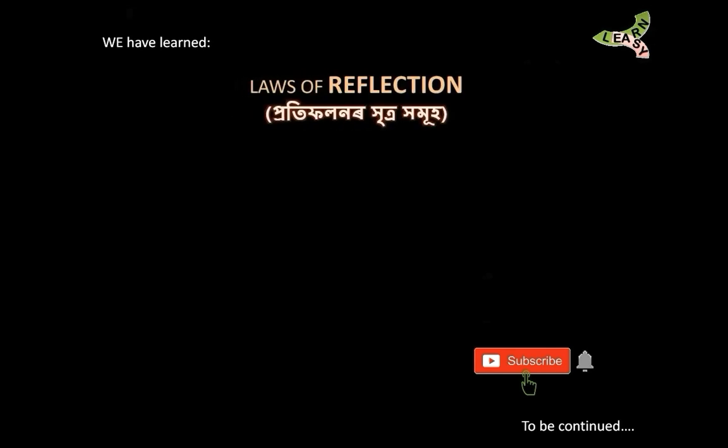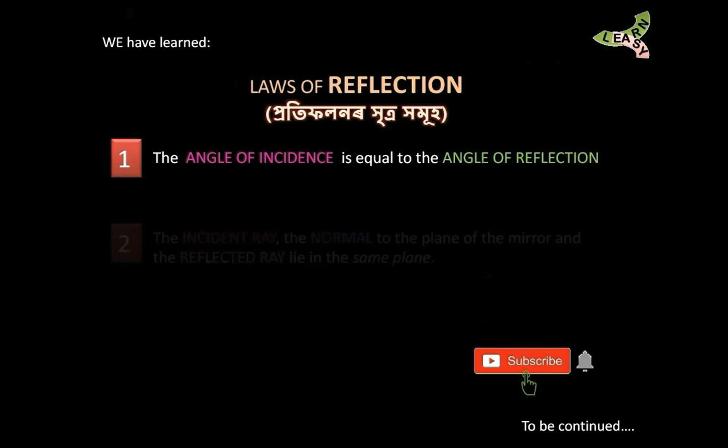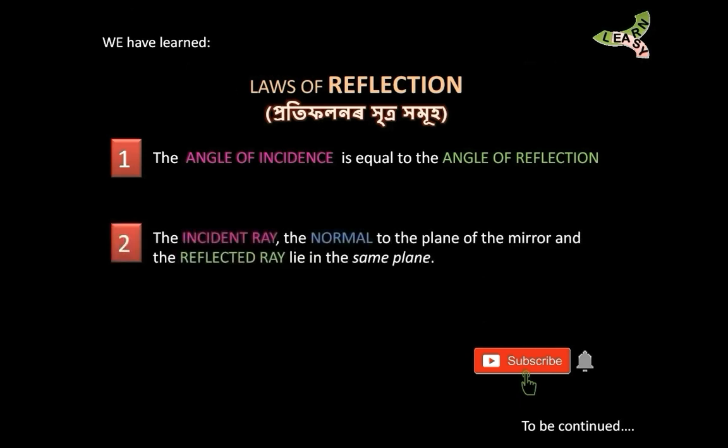Let me summarize the laws of reflection. The first law is: the angle of incidence is equal to the angle of reflection. The second law is: the incident ray, the normal, and the reflected ray all lie in the same plane.